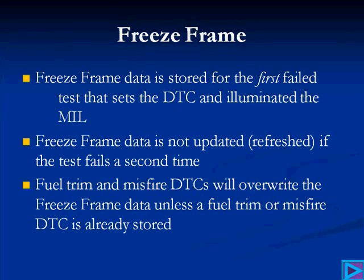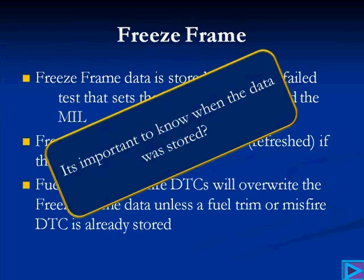Freeze frame — how important is that? We think it's very important. It's data that is stored for the first failed test that sets the code and illuminates the MIL. Freeze frame data is not updated or refreshed if the test fails a second time. So your freeze frame data is from the first time the PCM saw a fault and set the code. Fuel trim and misfire codes can overwrite the existing freeze frame data, unless the data already in the freeze frame is for fuel trim or misfire. So fuel trim and misfire can overwrite everything but itself.